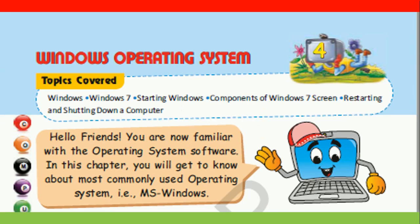In this chapter we will be studying about one of the operating systems — Windows 7. We will be reading the following topics: Windows, Windows 7, Starting Windows, Components of Windows 7 screen, and Restarting and Shutting Down a Computer.